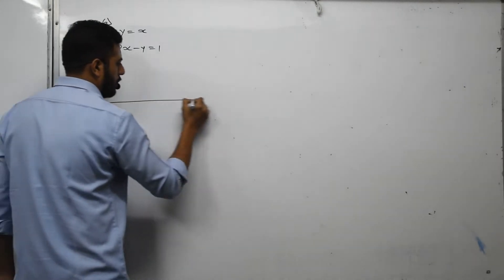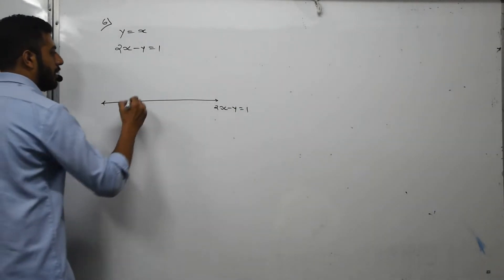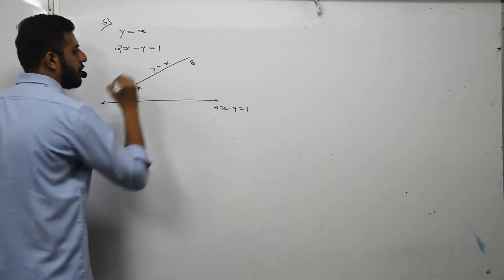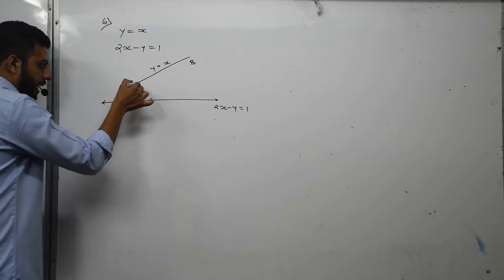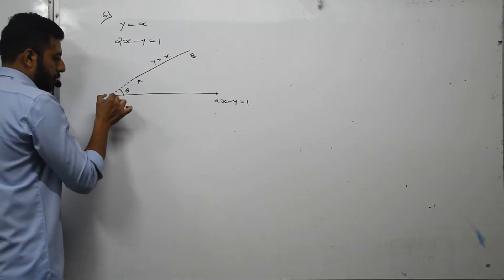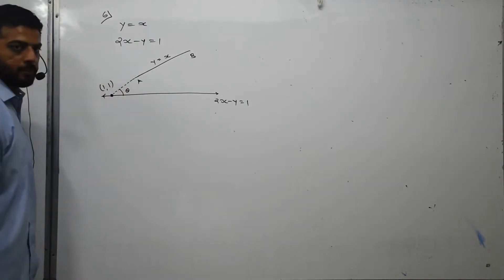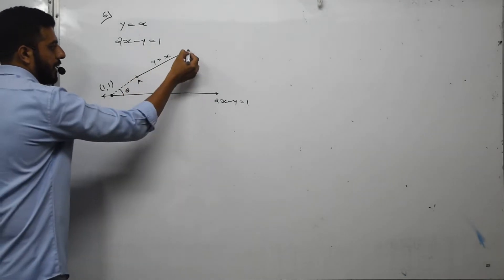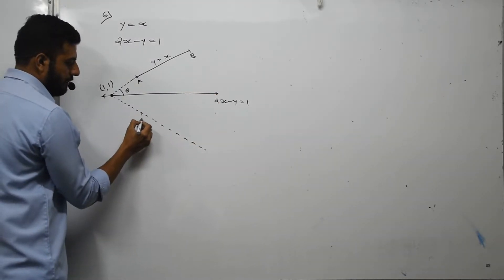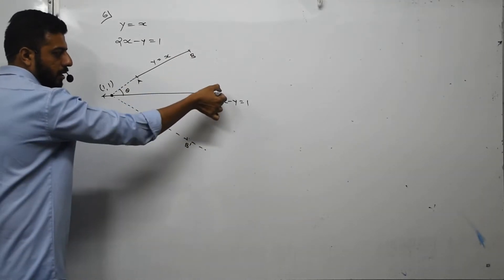Suppose this is the line 2x minus y equals 1, and there is a line segment AB with equation y equals x. The intersecting point of y equals x and 2x minus y equals 1 is (1,1). We want to find the image of this line segment AB. Let the image of AB with respect to this line be A prime B prime, where the image of A is A prime and the image of B is B prime.